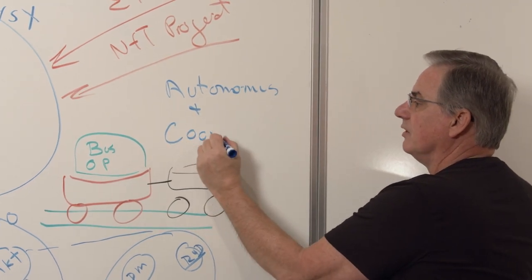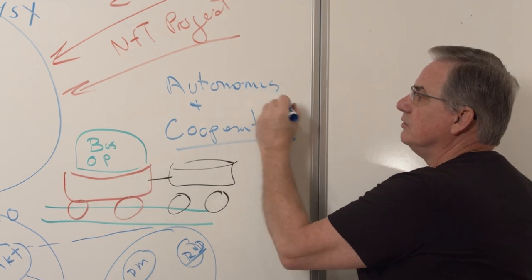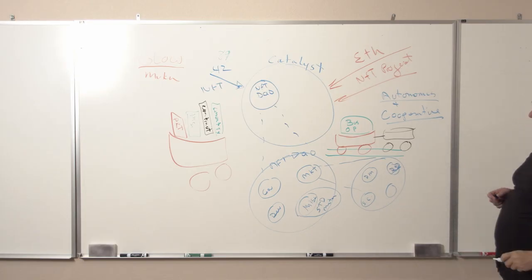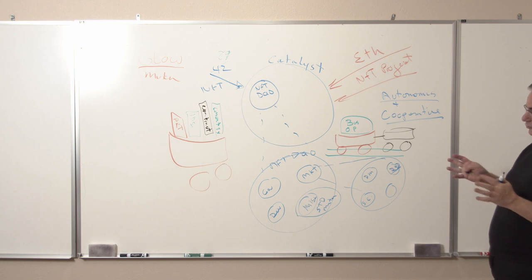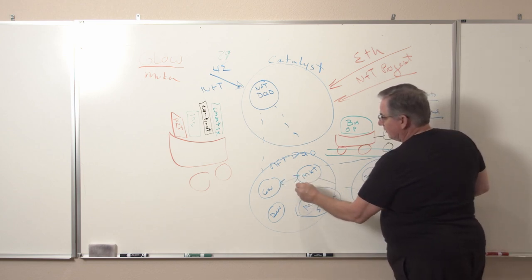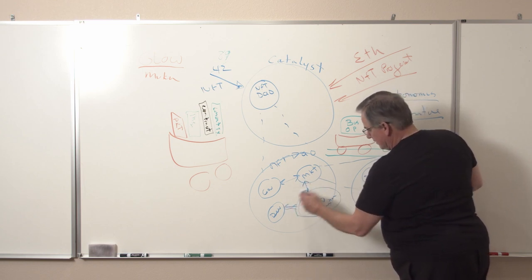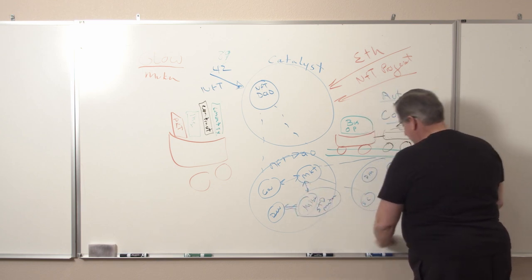Those are the values that create holons, and so basically in a heterarchical structure all of these communicate together. So what does that look like? What is a heterarchy?